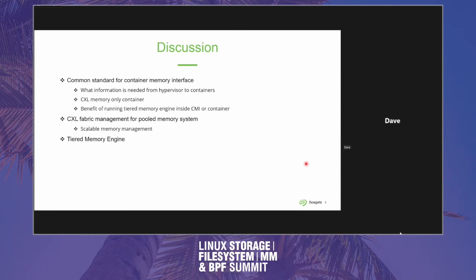There is quite a bit of standards work in this area. ACPI has a long-standing way of enumerating latency between different NUMA nodes. There's also something newer called the HMAT — the Heterogeneous Memory Attributes Table — which gives individual read and write latency and bandwidth for every proximity domain in ACPI, roughly corresponding to a NUMA node in Linux. For CXL there's also the CDAT table which provides the same kind of information for CXL-attached memory.